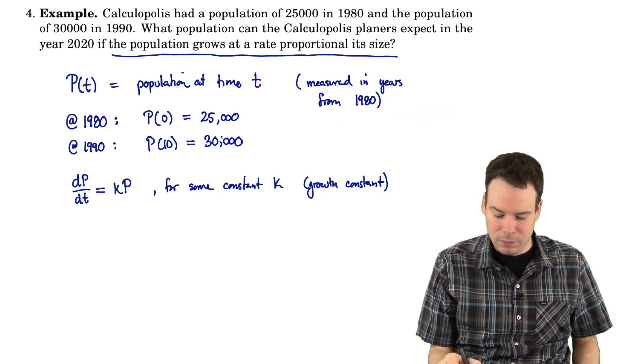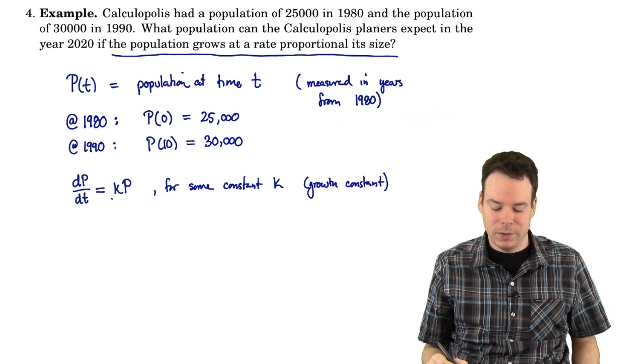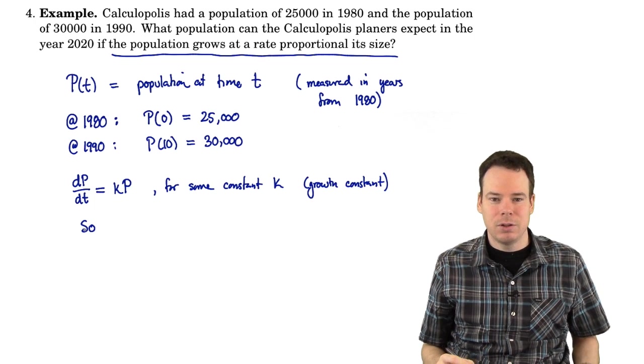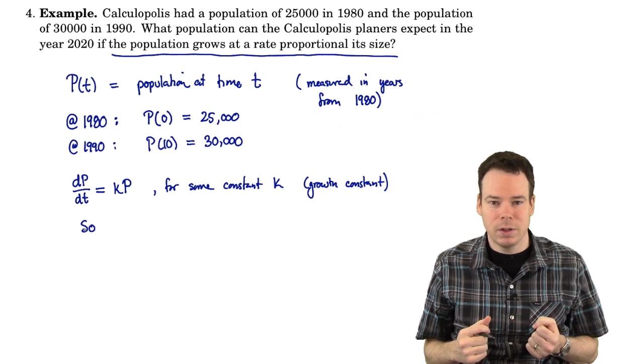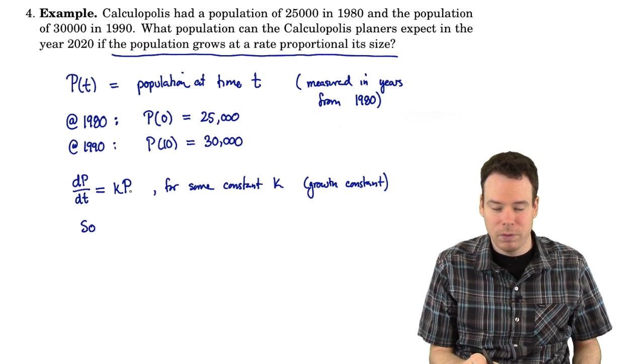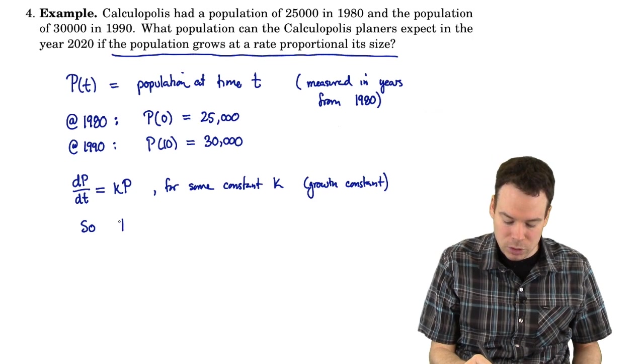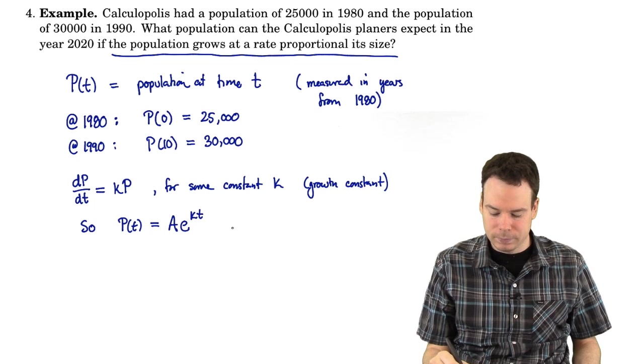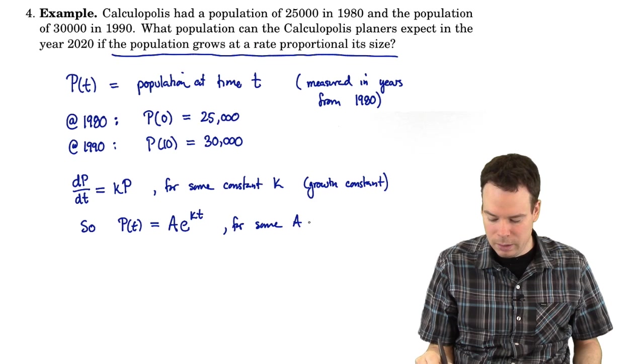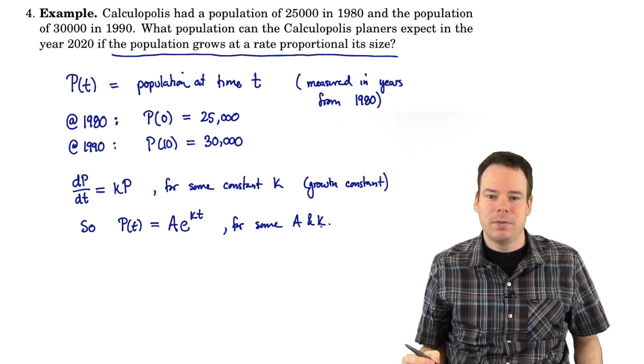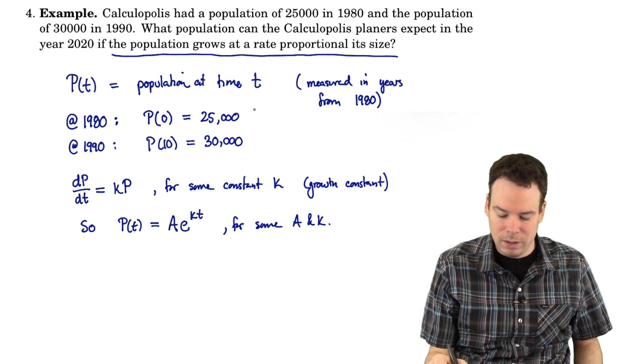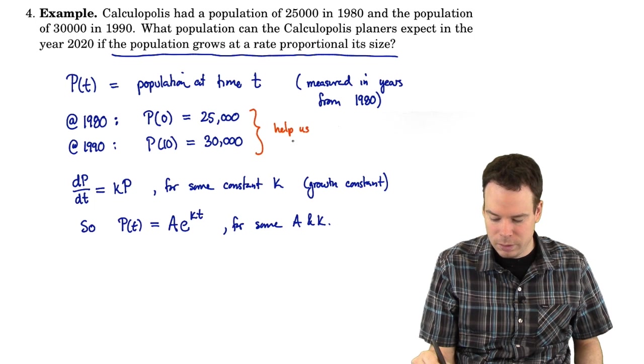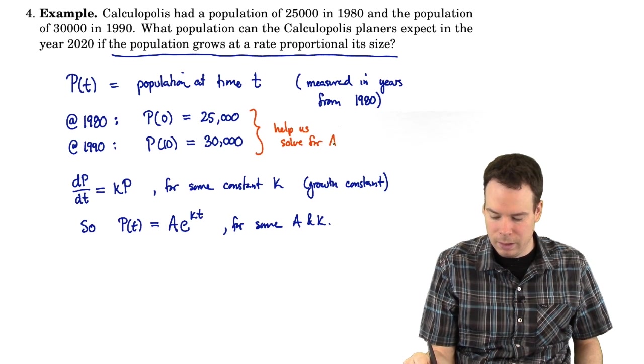We know that the function passes through these two points, P of zero is 25,000, P of 10 is 30,000. We also know that the derivative of P is a multiple of itself. From this bit of information, we know what the function has to be in terms of form. The function's got to be an exponential function. This was a discussion on the last page. If we have a function whose derivative is a multiple of itself, it has to be an exponential function. So P of t is some A times e to the kt for some A and k. Now we need to find what A and k is for this particular function, and that's where these initial conditions come in.